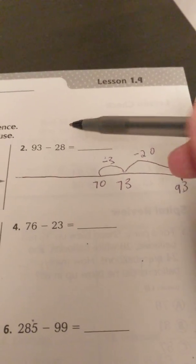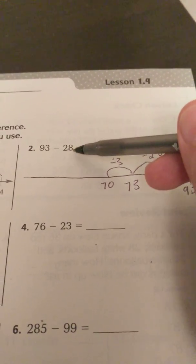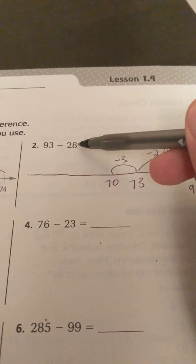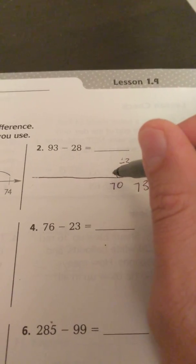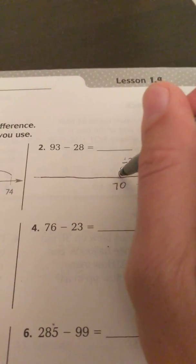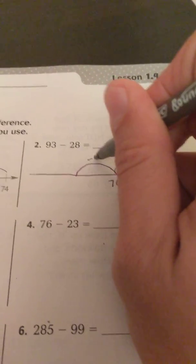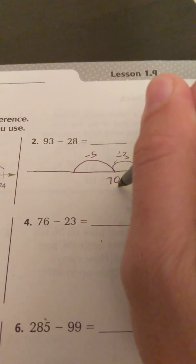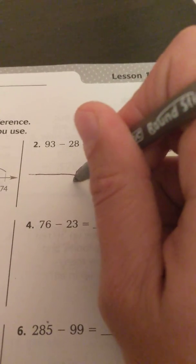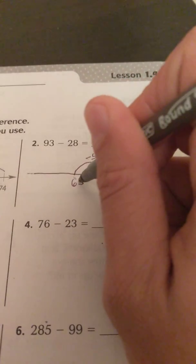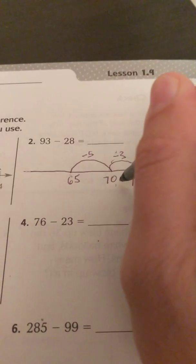Then from there, I know if I took away three from eight, I have five left over. So, and that's all I should have left over. I'm just going to go five more. Minus five. And if I count back from 70 five times, it would be 65. 70 minus five.